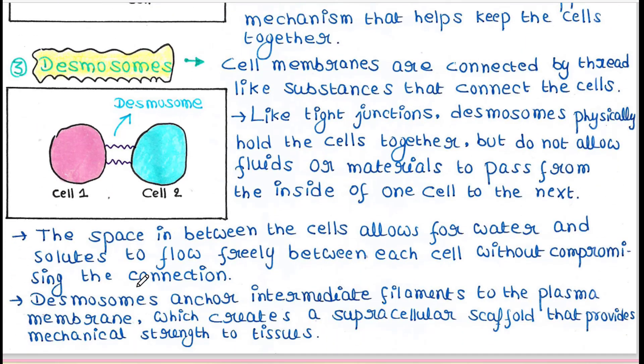Desmosomes anchor intermediate filaments to the plasma membrane. This is the plasma membrane, and in the cytoplasm intermediate filaments are anchored to the plasma membrane. This structure creates a supracellular scaffold that provides mechanical strength to tissues.